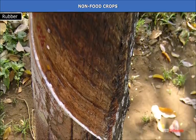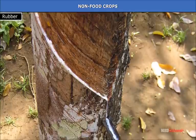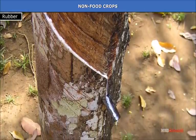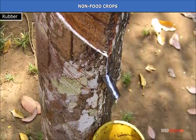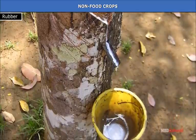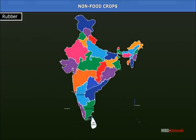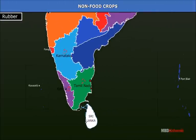Rubber: Rubber is an industrial raw material obtained from the latex of wild trees of equatorial forests. It has long been used for erasing pencil marks. Rubber plantation was introduced in 1902 in Kerala. Rubber is mainly grown in the southern states of Kerala, Tamil Nadu and Karnataka.